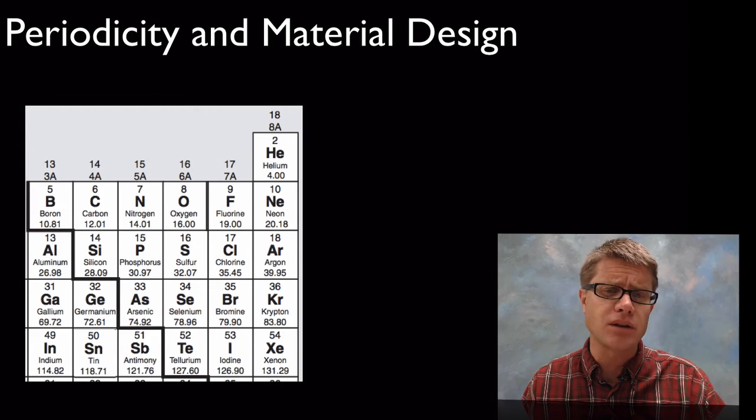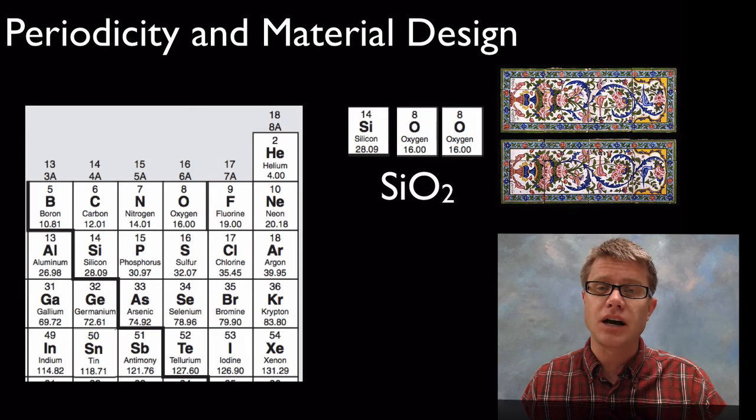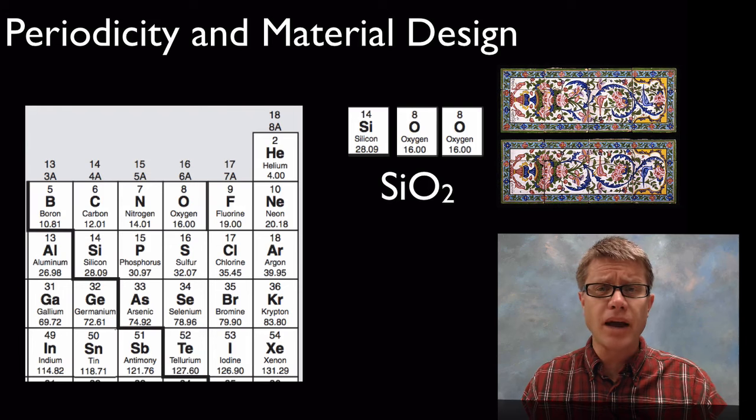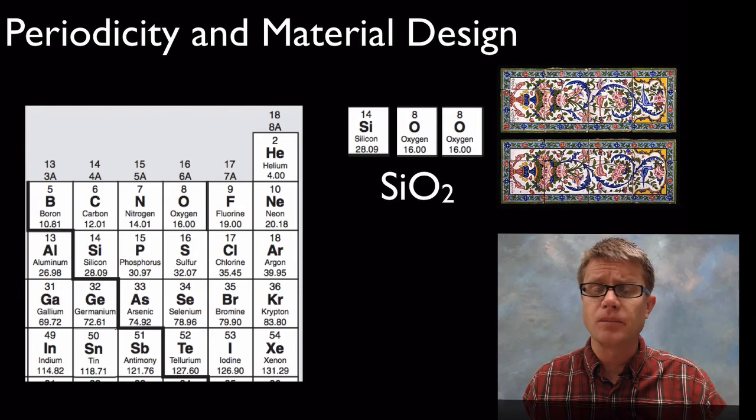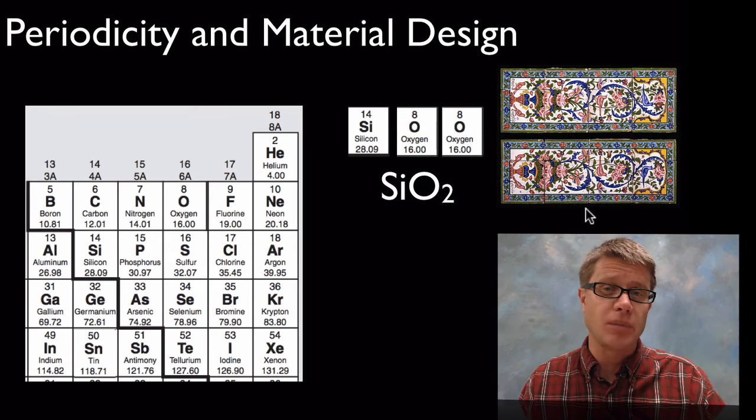What we can do is we can take things off the periodic table. So let me grab some atoms. Let me grab some silicon and some oxygen, and so we make some silicon dioxide. And when we do that we get a ceramic. A ceramic is going to build up maybe stoneware or earthenware. So it's going to build up these tiles over here on the side.